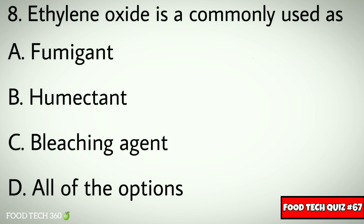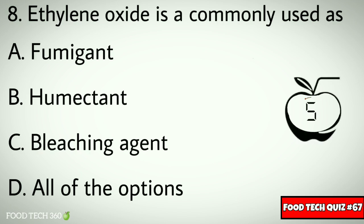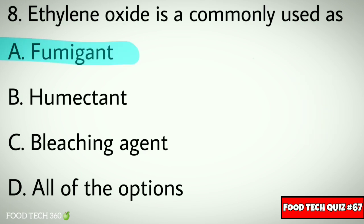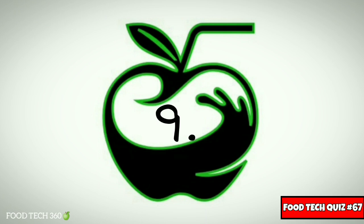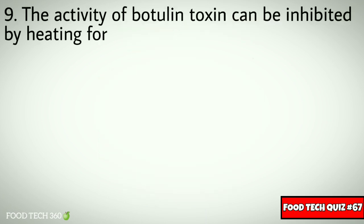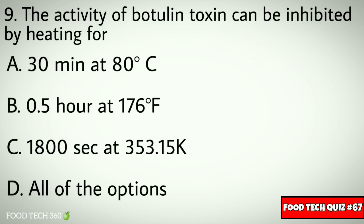Question number eight: ethylene oxide is commonly used as? Options: A) fumigant, B) humectant, C) bleaching agent, D) all of the options. Correct answer: A) fumigant.